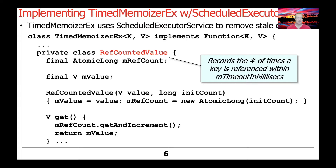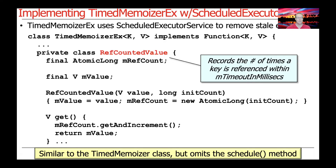In particular, Timed Memoizer had separate runnables that were scheduled in the RefCountedValue's schedule method. This implementation does not work the same way, although RefCountedValue is still used to keep track of the number of times a key is referenced within the timeout period.